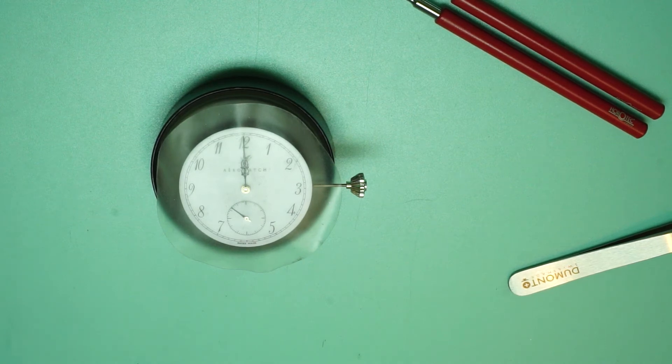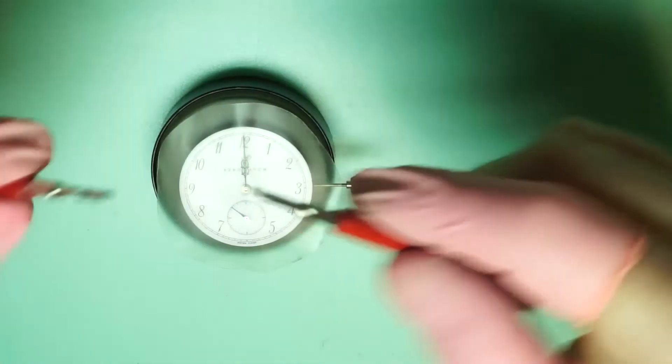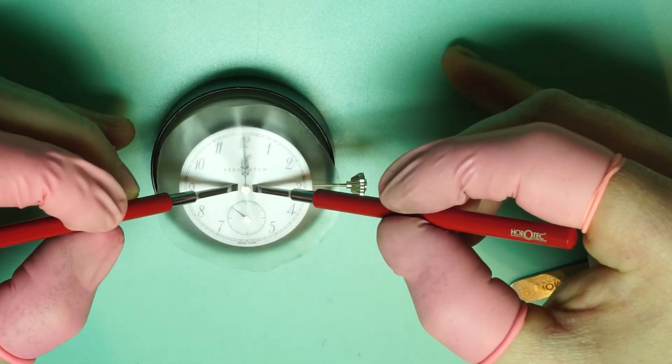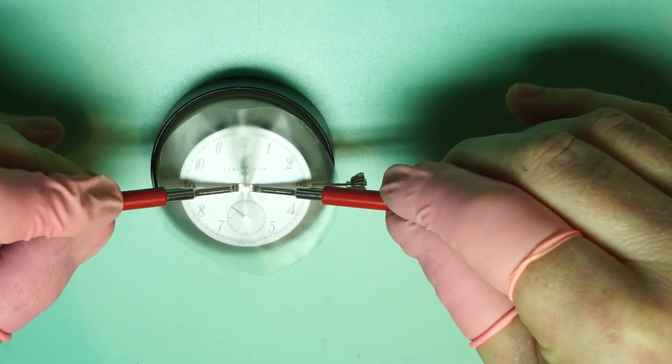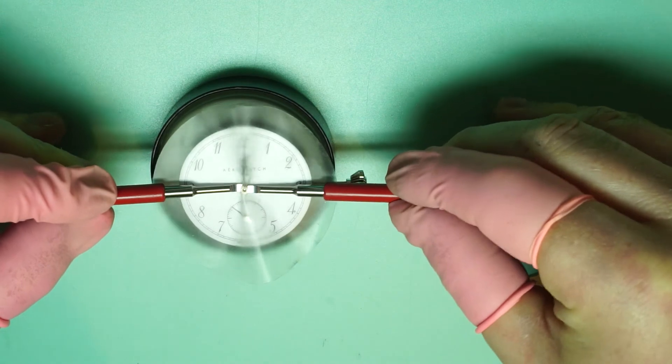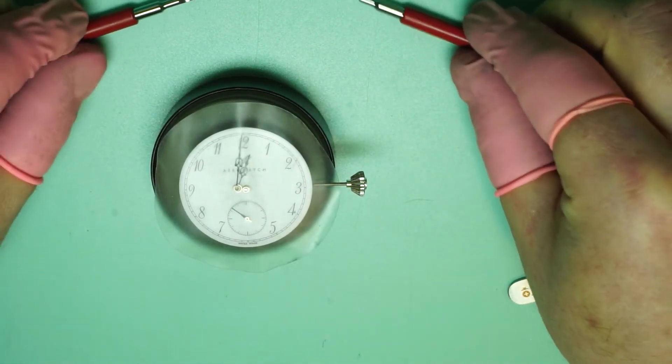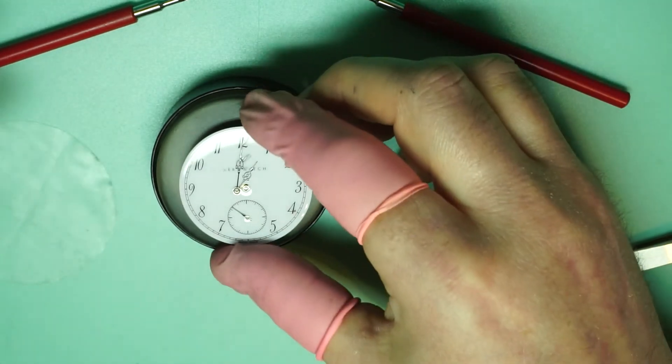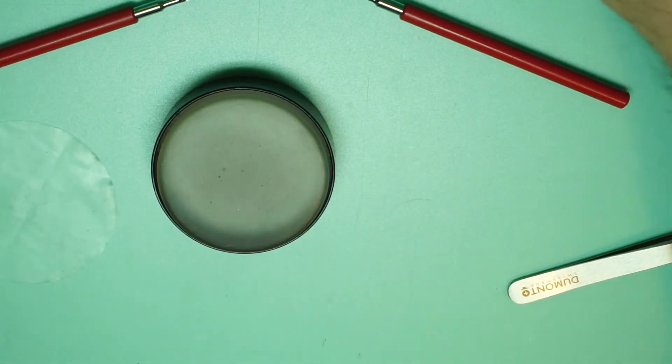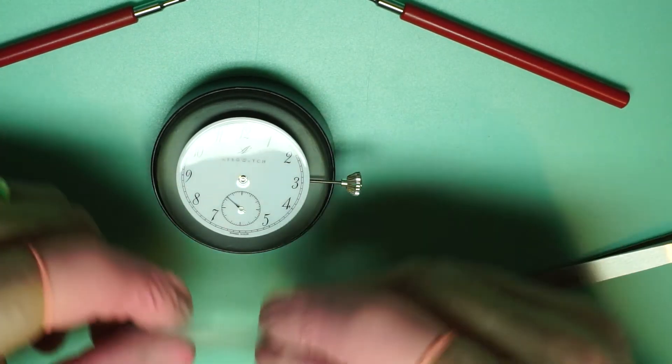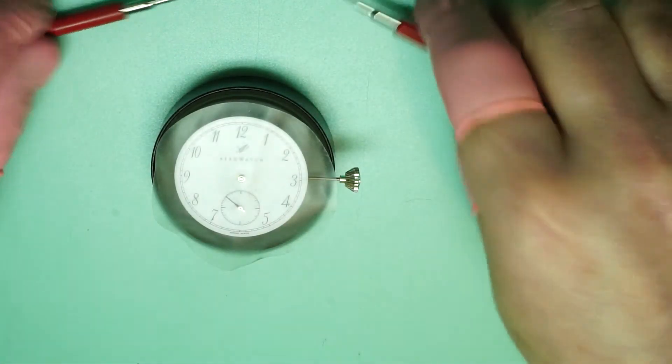So we're going to take the levers and we're going to make sure that both the levers reach underneath the hands and try and equally on each side lift the hands out of the way. So that is the hour hand and the minute hand and we can gently let them fall off the dial into the tray.